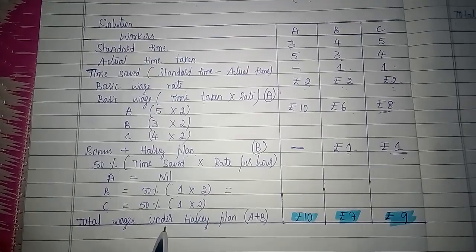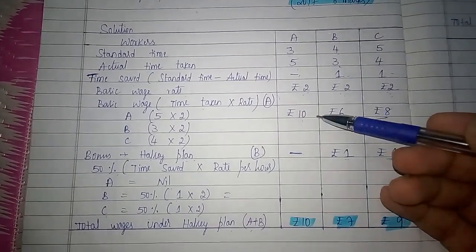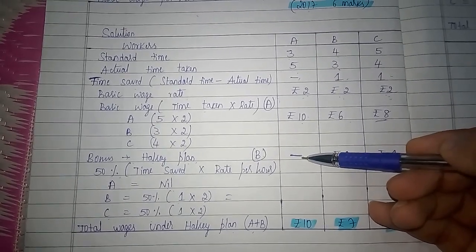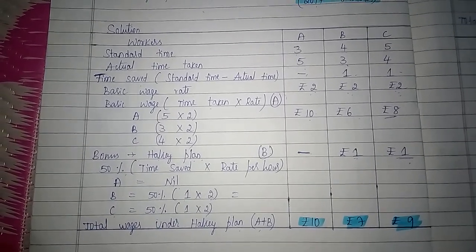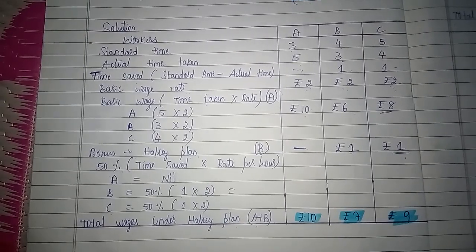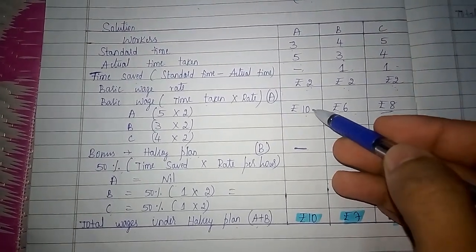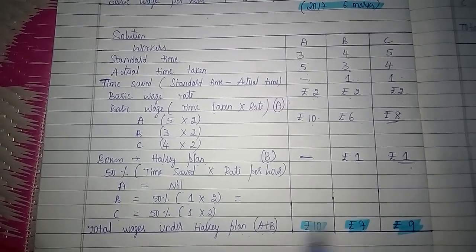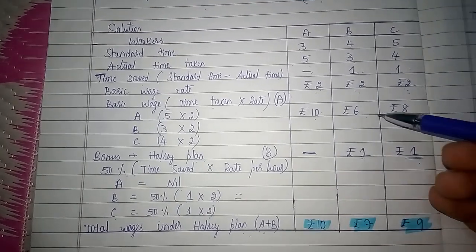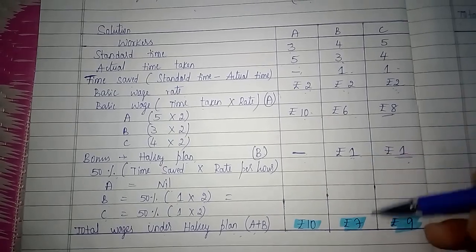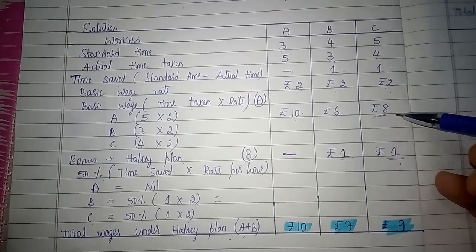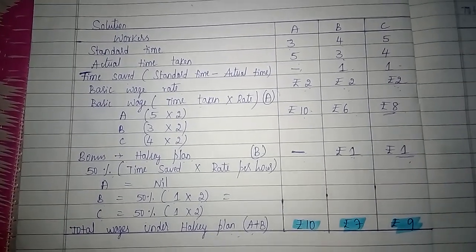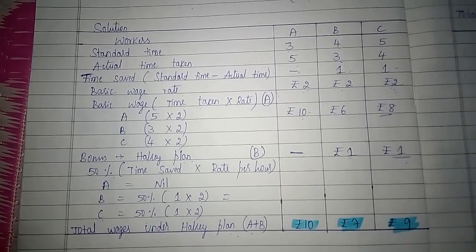Total wages under Halsey plan will be A plus B, where A is the basic wage (time taken into rate per hour) and B is the bonus. So total earnings under Halsey system: for A, 10 plus 0 equals 10 rupees. For B, basic wage is 6 rupees plus 1 rupee bonus equals 7 rupees total earnings. For C, basic wage is 8 rupees plus 1 rupee bonus equals 9 rupees total earnings under Halsey plan.